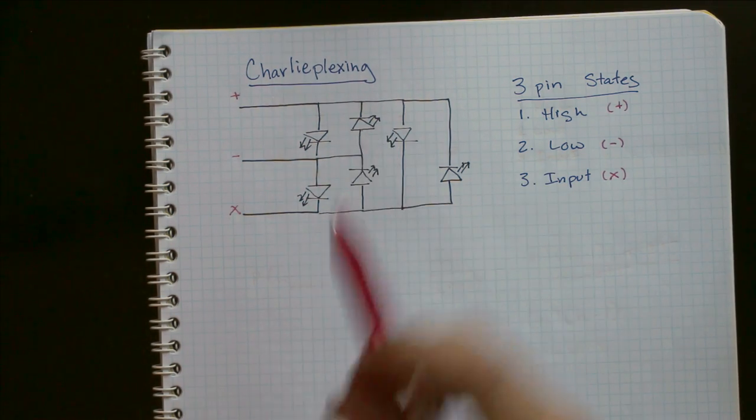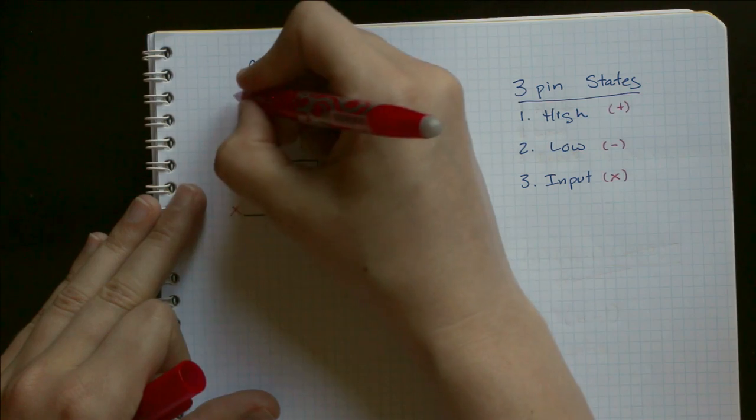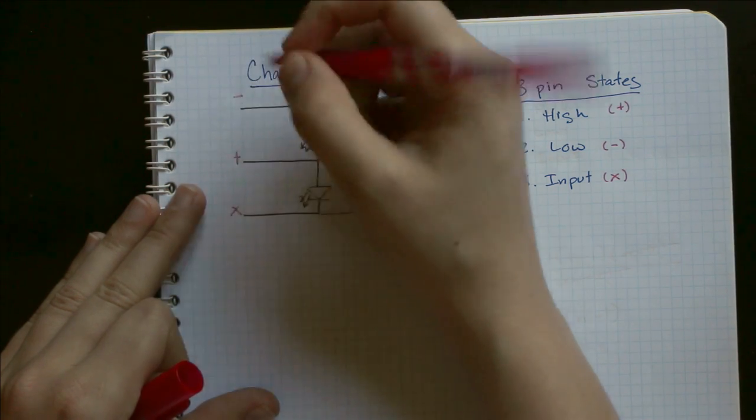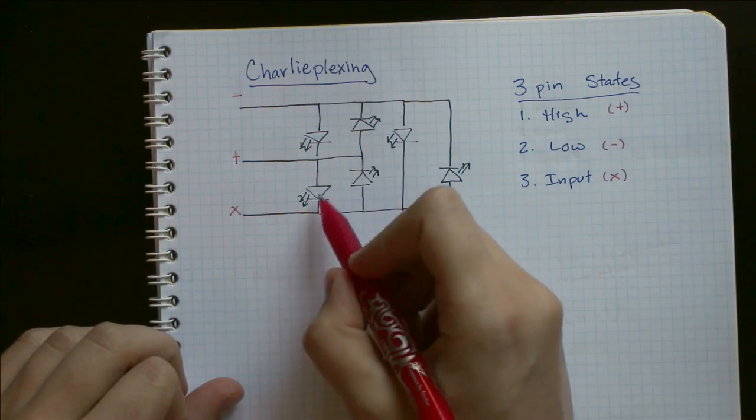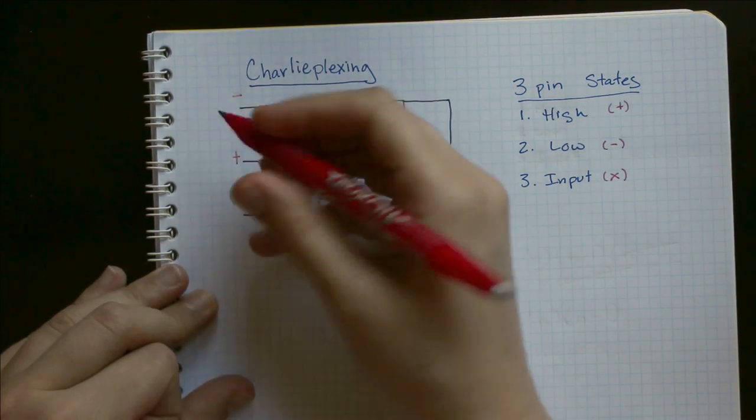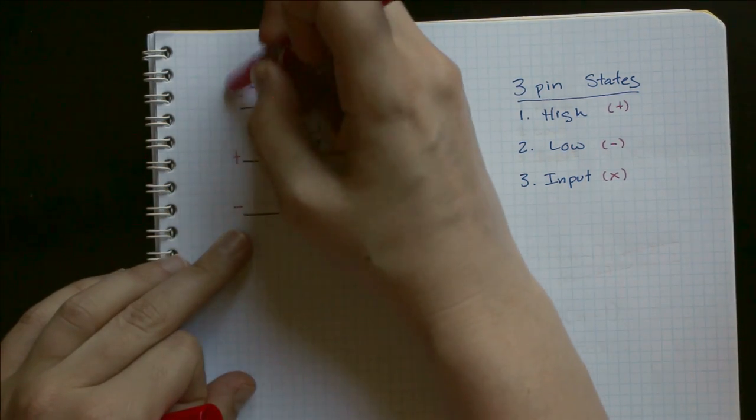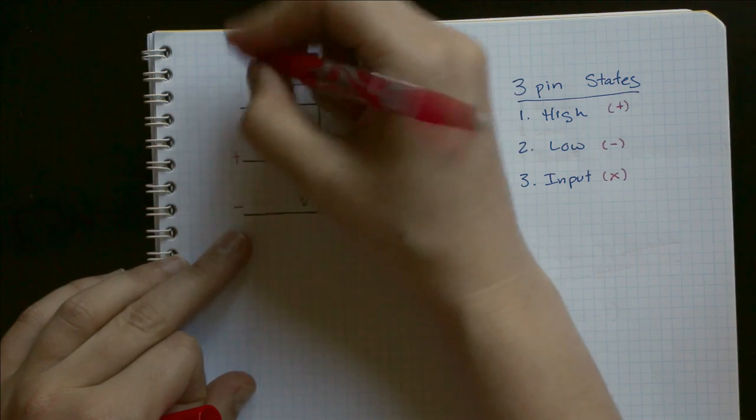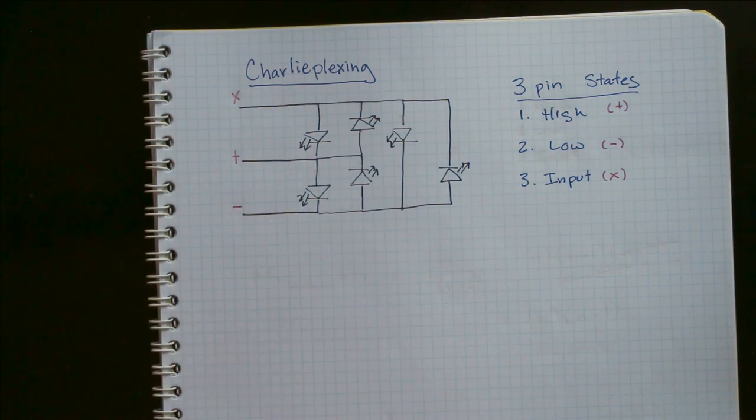If we want to turn on this pin, we just flip which is high and which is low and keep this one as input. If we want to turn on this LED, we change this from input to low and this pin from low to input.